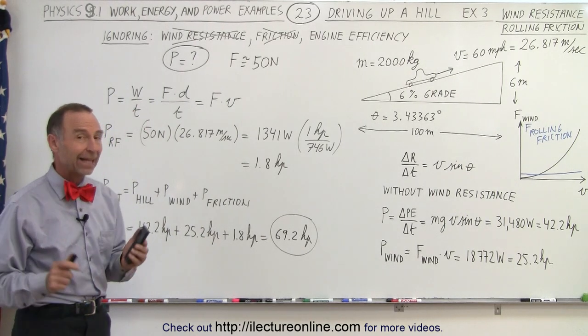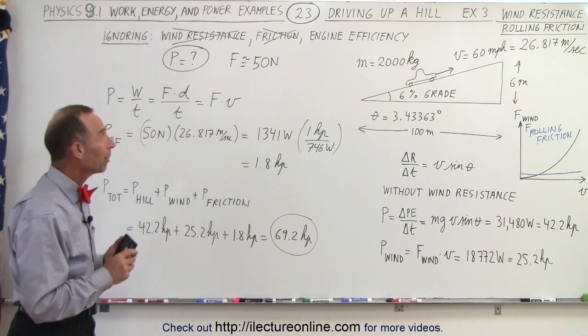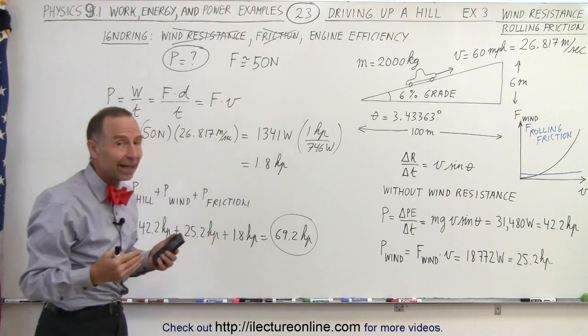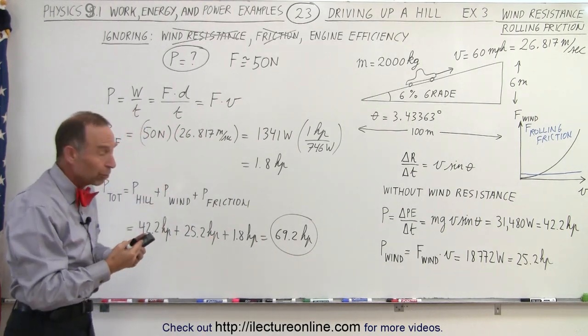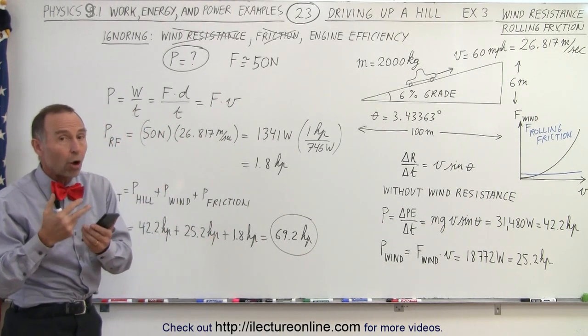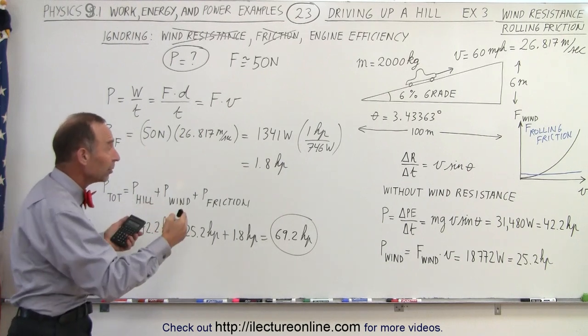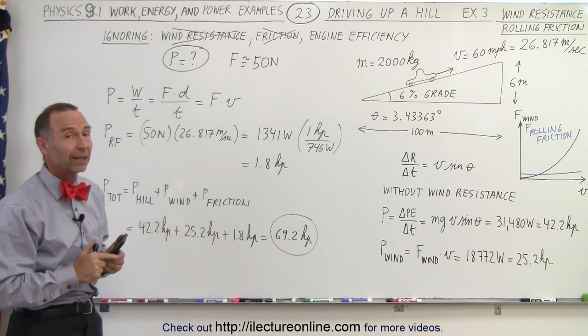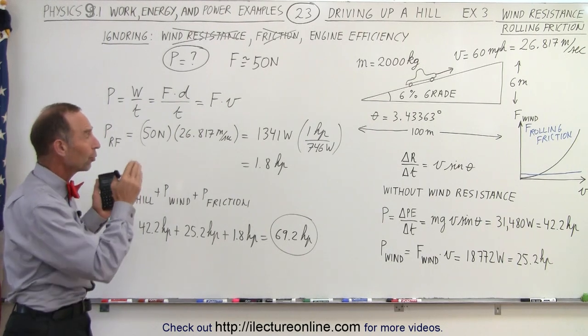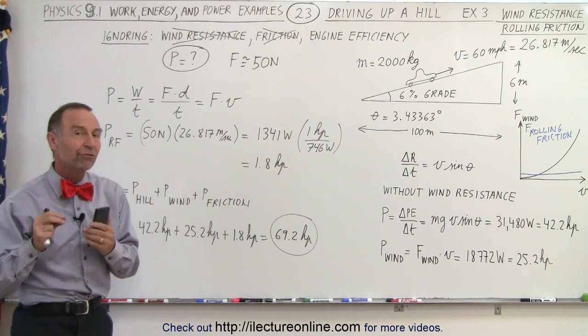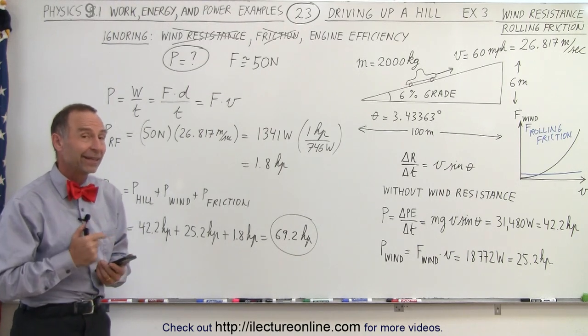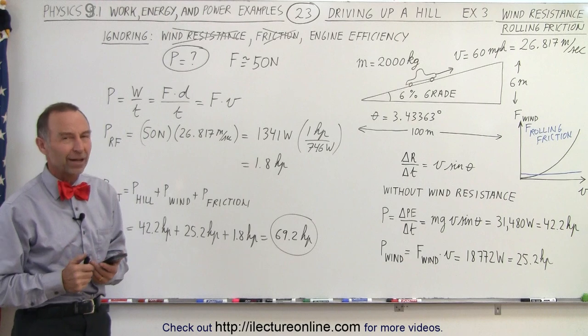But that's not the big part—the big part is engine efficiency. If an engine puts out 100 horsepower, that doesn't mean all 100 horsepower are available to do what you need, only a fraction of that, which changes things quite a bit. In the next video, we'll take into account engine efficiency, and you'll realize why some cars have trouble getting up that hill.